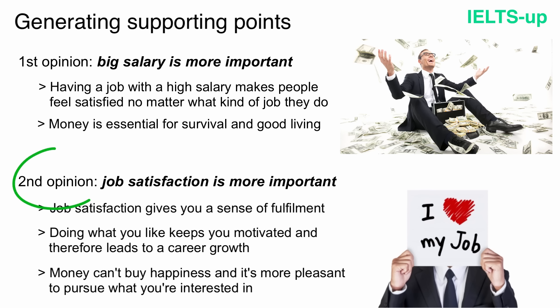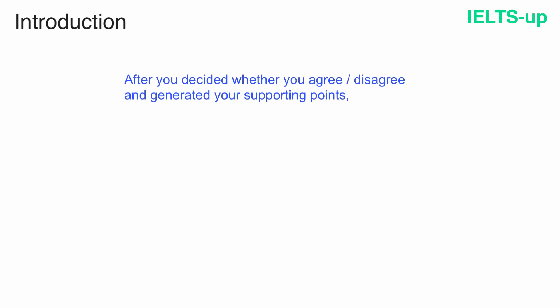For our essay, we'll choose the second opinion. So we will write that we disagree with the statement and that job satisfaction is more important than big salary. After you decided whether you agree or disagree and generated your supporting points, it's time to start writing our essay.